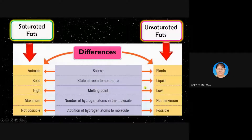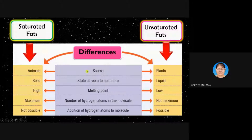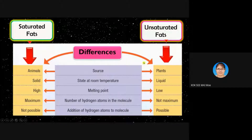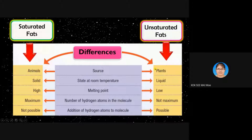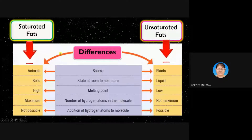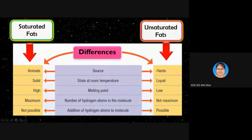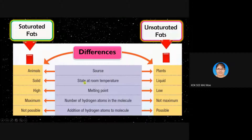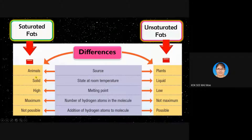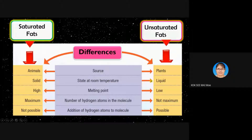Now let's see the differences. The source is different: saturated fat is from animals, unsaturated fat is from plants. So we can say saturated fat is normally a solid fat, while unsaturated fat is a liquid oil. At room temperature, saturated fat is solid, and unsaturated fat is liquid.